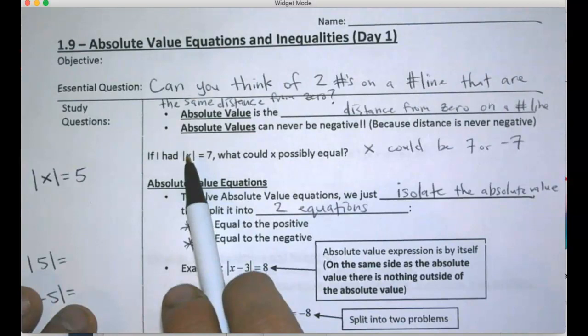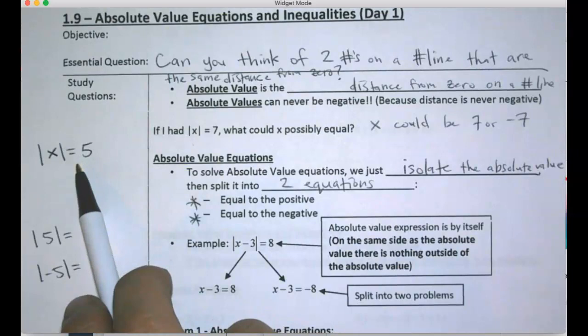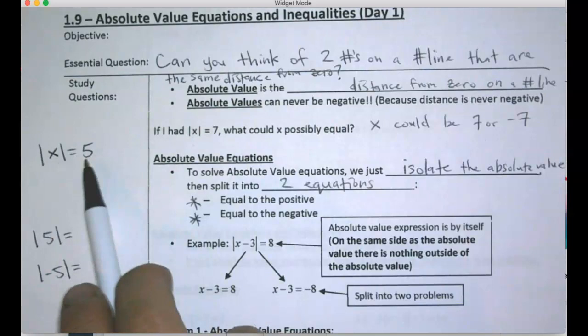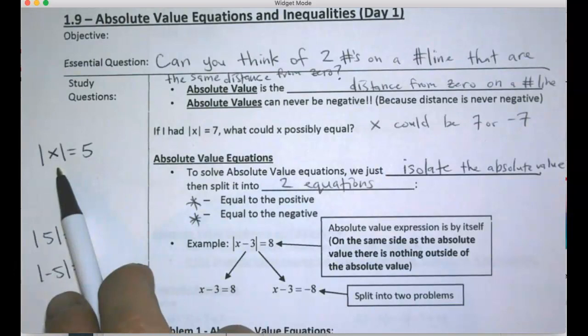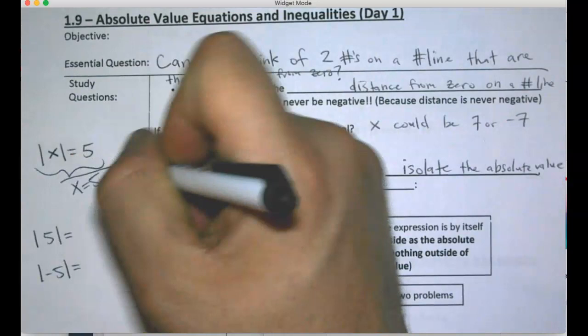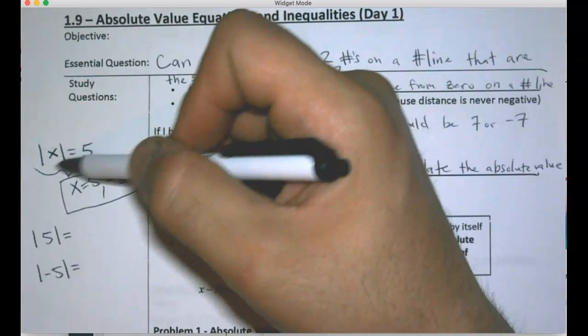The number always comes out positive for an absolute value. The main idea you need to understand is: whatever's inside an absolute value equals the distance from zero. In this case, x is 5 spaces from zero, so x could be 5 — since 5 is 5 spaces from zero — but negative 5 is also 5 spaces from zero. With variables inside, it's saying whatever number is in here has a distance from zero of 5 units.